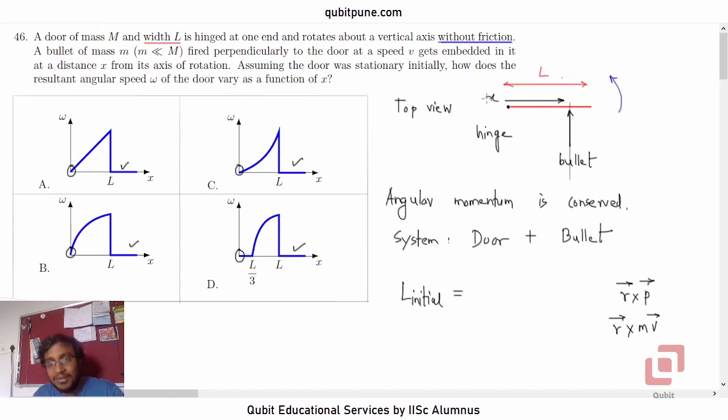And what is v bar? V bar is actually this vector, so v bar will be perpendicular to x bar. The magnitude of this initial angular momentum will be x mv sin 90. That is the magnitude of cross product. We can say that the initial angular momentum is mvx. Now, what is the final angular momentum?